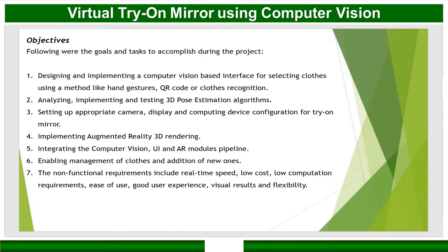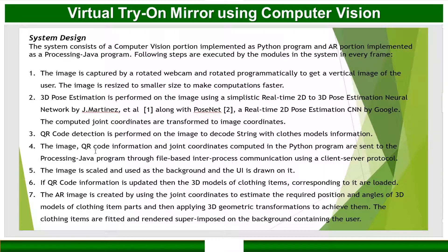Our system is divided into two major parts. The first is the computer vision portion, implemented using a Python program, and the second is the augmented reality portion, implemented using a Processing Java program. Breaking it into smaller parts: we capture an image from the user via a rotated webcam. Inside the computer, the image is rotated again to make it vertical and resized to a smaller size for easier computation.